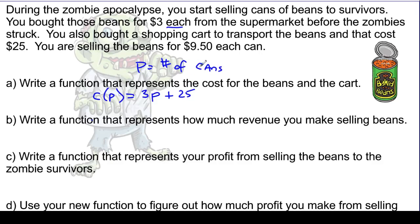I'm not going to attach a P to the $25 because I'm not paying this for each can of beans — the number of cans doesn't matter for that charge. This is called a flat cost. So I'm paying a cost per can of beans, $3, and a flat cost of $25. This function, C(P) = 3P + 25, represents how much I'm going to have to spend to get these items.